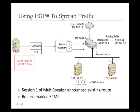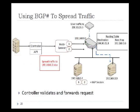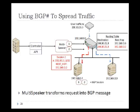The second example is spreading traffic. The multi-speaker has two BGP sessions to the router, and the first session has already announced an existing route with ECMP enabled on the router. The tenant application sends a request to spread traffic to another server. The controller validates and forwards the request to the multi-speaker, which uses the second peering session to send that request as a BGP message to the router.